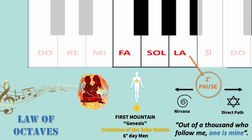Of a thousand initiates who reach that point, 999 choose the path to nirvana — fulfilling the phrase of Christ: 'Out of a thousand who follow me, one is mine.' Those who, on the contrary, choose to do the will of the Father by choosing the direct path, will have the right to unite with their divine soul represented by the Buddhic body. Then that perfect marriage will happen — the union between the human and the divine in us. The human soul represented by a triangle pointing up, and the divine soul represented by a triangle pointing down. When joined together, they form that six-point star or Star of David, which is the star that announces the birth of Christ — it is from this union that the Christ force will be born within us, represented by the Atmic body.